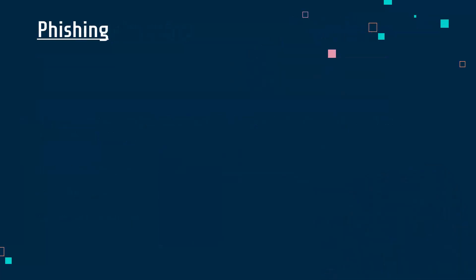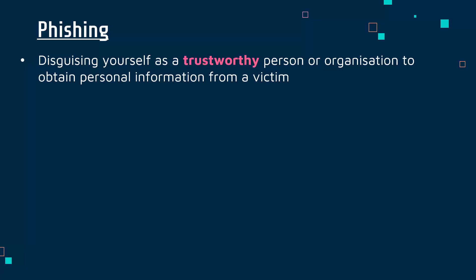The first technique we'll look at is phishing, a really common type of social engineering. This is where the attacker disguises themselves as a trustworthy person or organisation to try and obtain personal information from a victim. They are usually impersonating somebody trusted or at least somebody interesting. A classic example is an email claiming a celebrity or royalty has died and is leaving you money. Phishing can be done over email, texting, or calling.